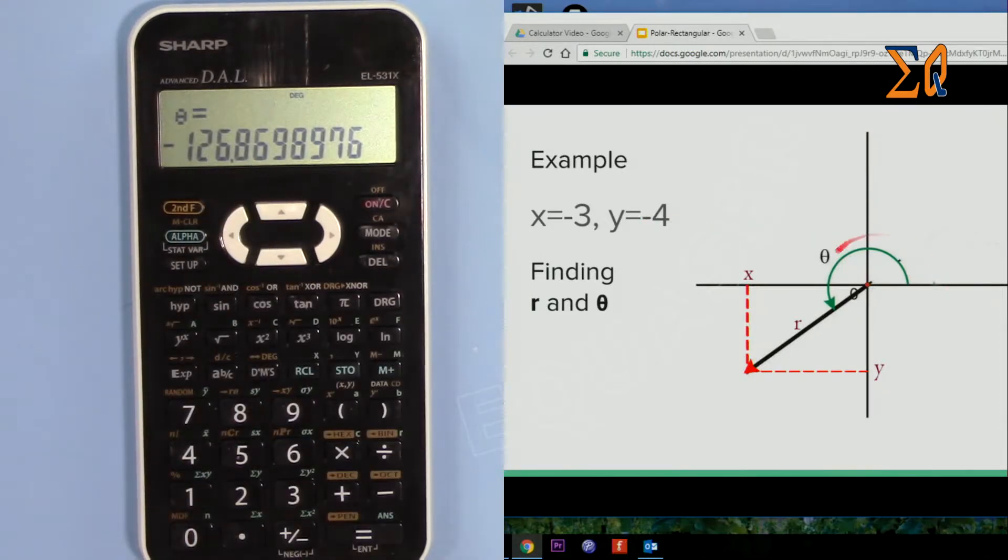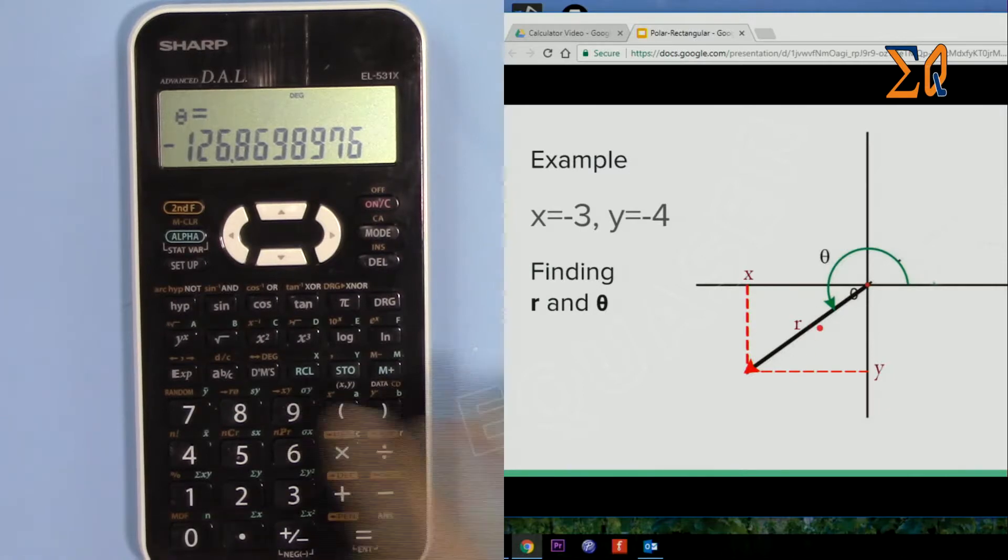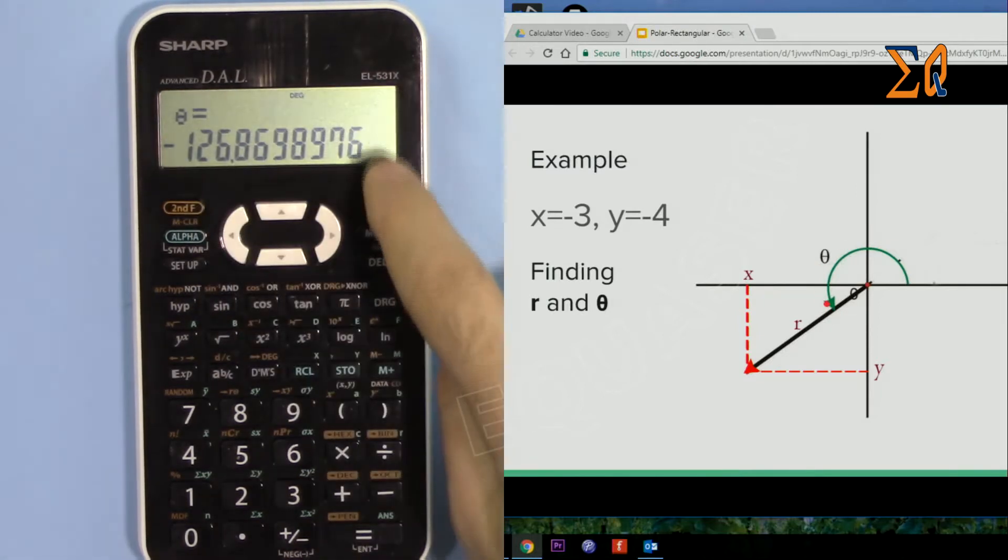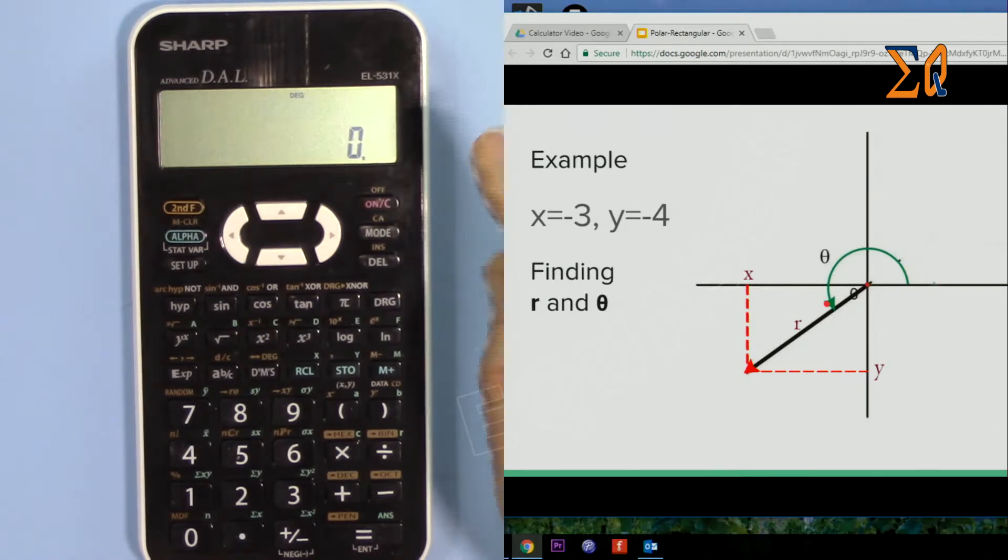Now this gives us from here to here. But because this value is minus, it means it has been calculated from this side. To get it from the other side... and now I'm pressing clear.